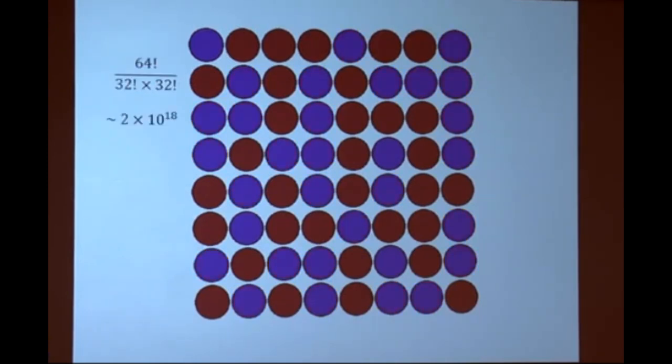How about if half the coins are red and half the coins are blue? This is a kind of generic situation. The numbers are vast. Two times 10 to the 18th configurations. Supposing you were just to pick a configuration randomly, what would you be likely to pick? You would be very unlikely to pick one. You would be extremely unlikely to pick all reds. Picking them at random, you'd probably pick something like this, just because there are so many configurations like this.